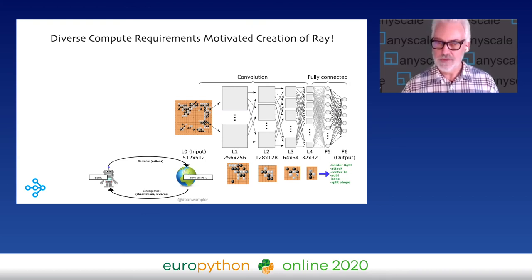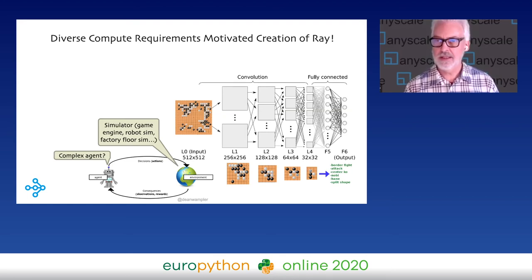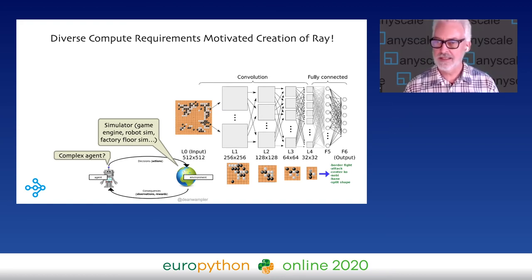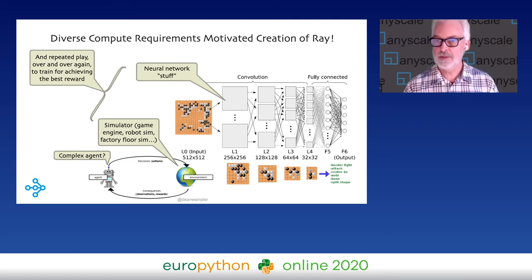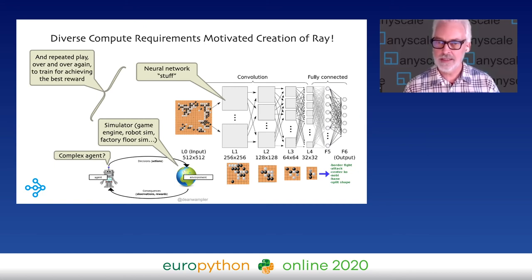Back to why Ray was created: reinforcement learning requires support for simulators and game engines that look like regular applications with complex distributed graphs, as well as the agent itself which can be fairly complex — much different than typical data science and neural network training. The diversity of CPU requirements and memory access patterns is what drove the need to build something very flexible like Ray, but also very efficient, so you can build tools like RLLib on top of it.